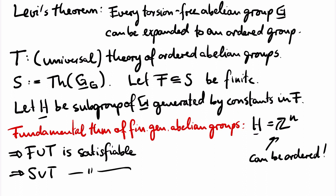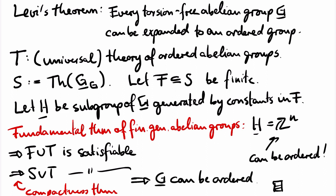Therefore the compactness theorem implies that the union of S and T is satisfiable and has a model M. The constants in the signature induce a substructure of M of the same domain as G. Since the axioms of T are universal, they also hold in this substructure. So the reduct of the substructure with the signature of ordered abelian groups is an ordered abelian group that expands G. We have found an ordered group expansion of G.